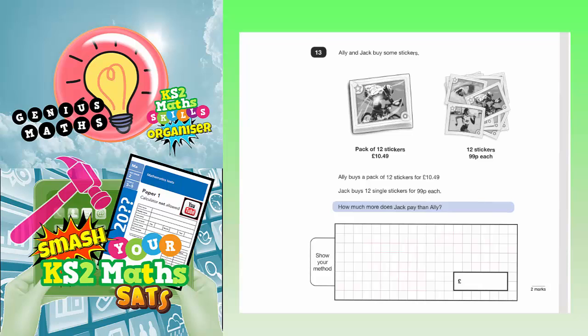Question 13. Ali and Jack buy some stickers. The pack of 12 stickers is £10.49, and 12 stickers, if you buy them separately, is 99p each. Ali buys the pack of 12 for £10.49, and Jack buys 12 single stickers for 99p each. We've got to work out how much more does Jack pay than Ali.